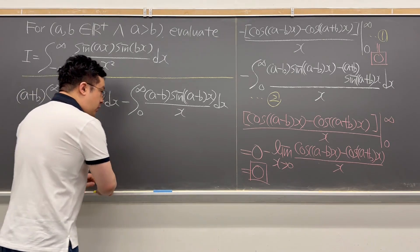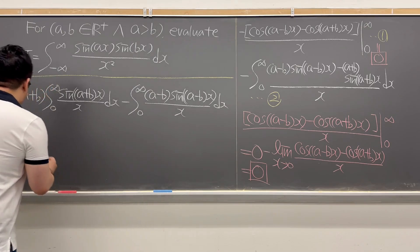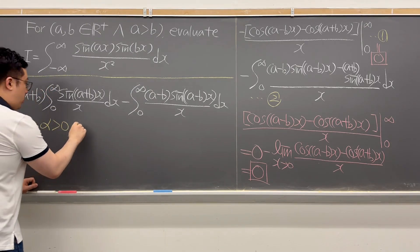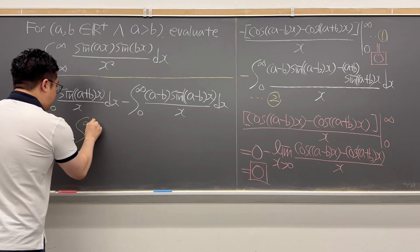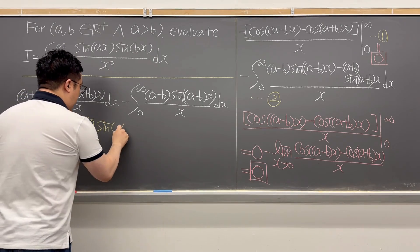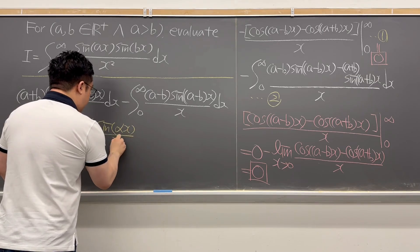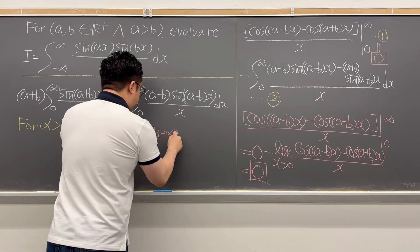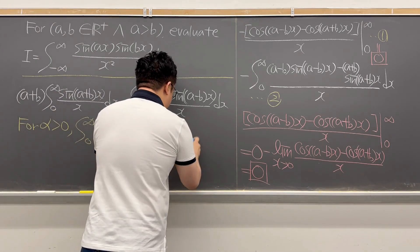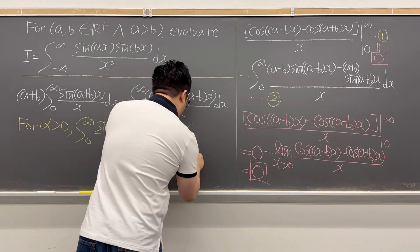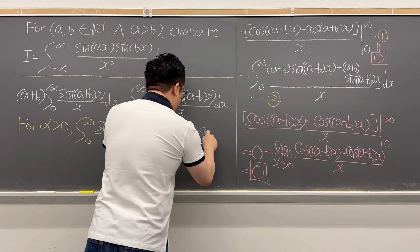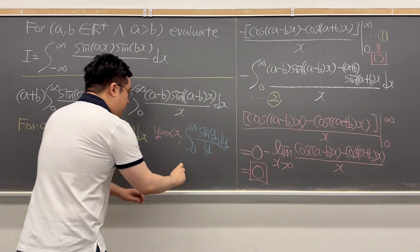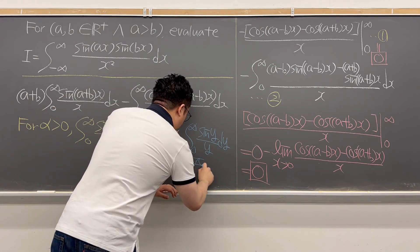We have this expression, and in general, for alpha being a positive number, the integral from 0 to infinity of sine(αx) over x dx — we can set y equal to αx, and this becomes the integral from 0 to infinity of sine(y) over y dy, which equals π over 2.